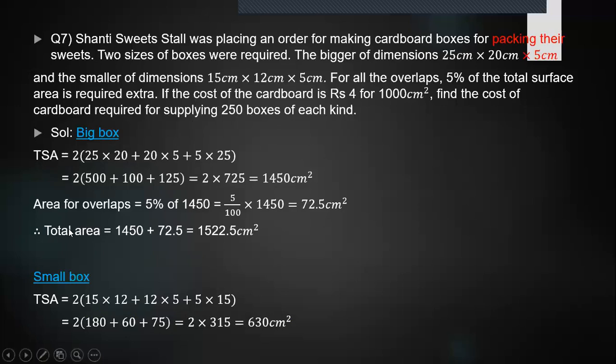So I begin the solution with taking the big box first, and I'm working out the total surface area of the big box using the formula that comes out to be 1450 cm². But you also have to include the area for overlaps, which is going to be 5% of 1450, which is 72.5 cm². From the two values, you can work out the total area of the big box, which is 1522.5 cm².